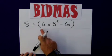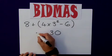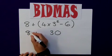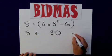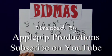So, I've just worked out that the bracketed part was equal to 30. I had my addition here. 8 plus the 30 gives me a final answer of 38. So, I hope that helps.